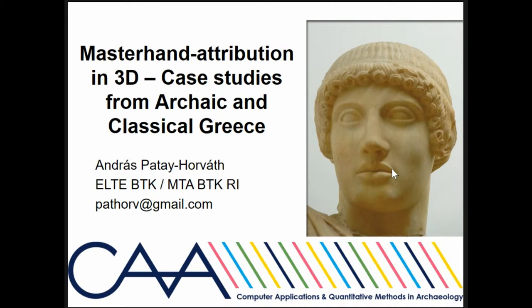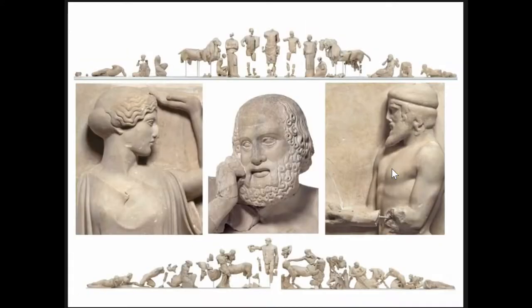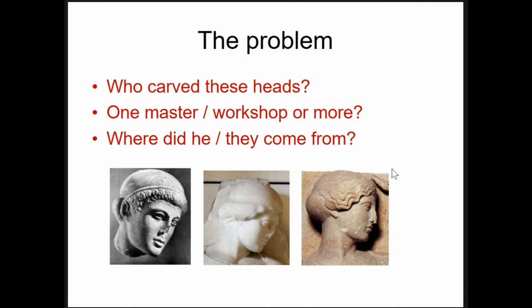I cannot present final, definitive results for various reasons, but at least a few cases and the background of where we started and where we got up to now. You see here a picture of the sculptures decorating the Temple of Zeus at Olympia. These are over-life-size marble sculptures from the 5th century, pretty well preserved, excavated more than a century ago. There are basic questions still unclear: who carved these sculptures — one master, several masters, or workshops — and where did they come from?